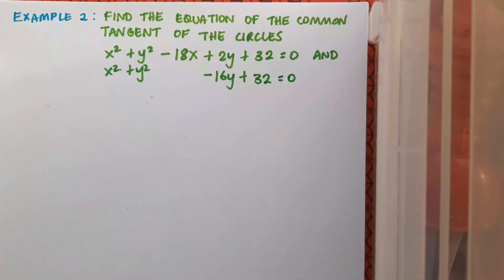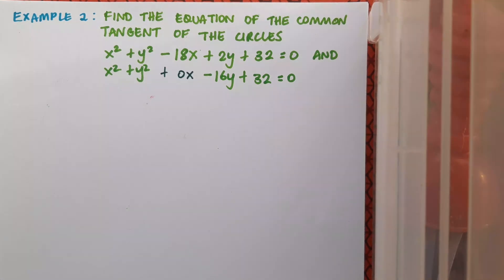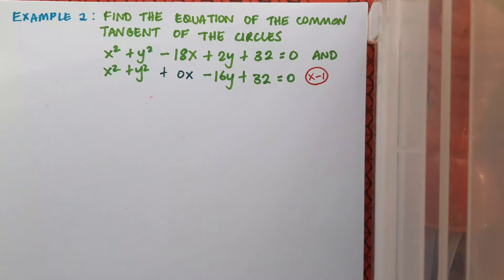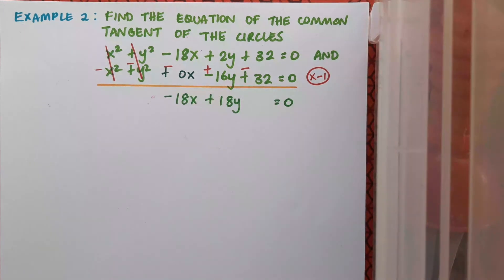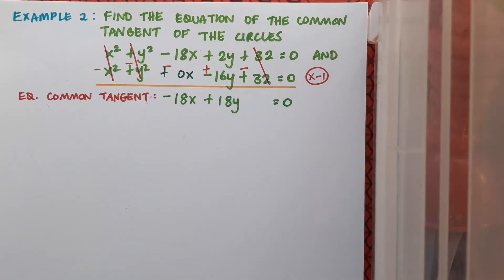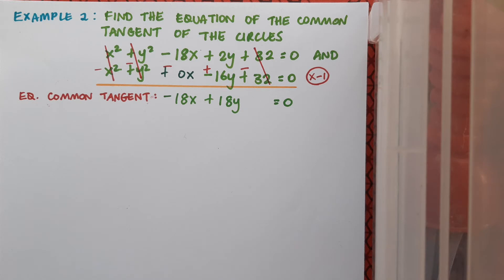Here's the second example. Now I want to find the equation of the common tangent of these two circles: x² + y² - 18x + 2y + 32 = 0 and x² + y² - 16y + 32 = 0. Note that the second circle doesn't have any x term - that's fine, you can put in a 0x. It's the exact same process: multiply either equation by -1, then combine. The x² and y² cancel, leaving -18x + 18y = 0. Interestingly, this equation of the common tangent is just the equation of a line, and aside from the question mentioning it's a tangent, there's no way to tell by looking at it whether it's a tangent or a chord.